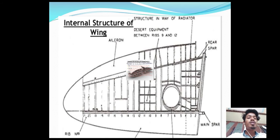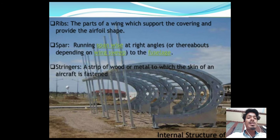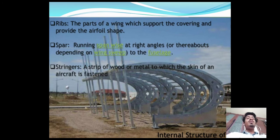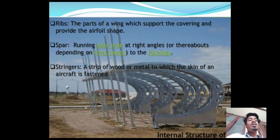You can see the spars and ailerons fitted between ribs 9 and 12. The main spars and ribs provide the airfoil shape and support the covering. Ribs provide the airfoil shape and spars run spanwise at right angles to the fuselage. A stringer is a strip of wood or metal to which the skin of an aircraft is fastened.